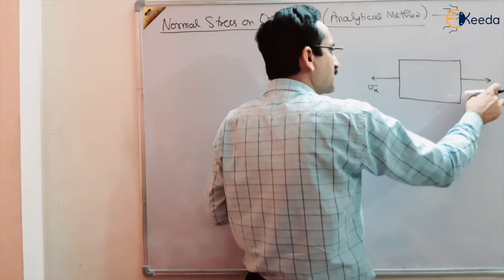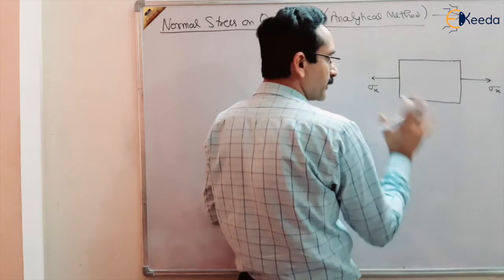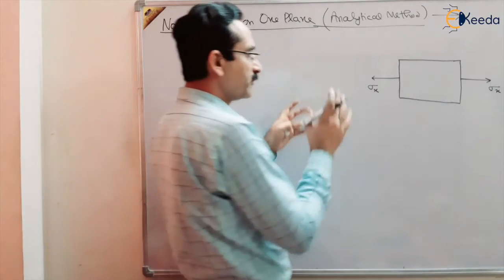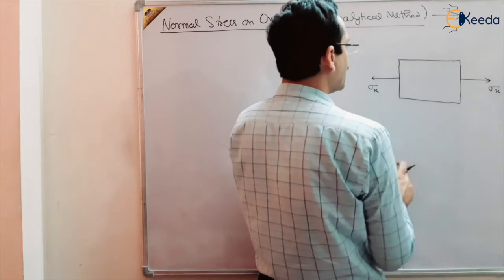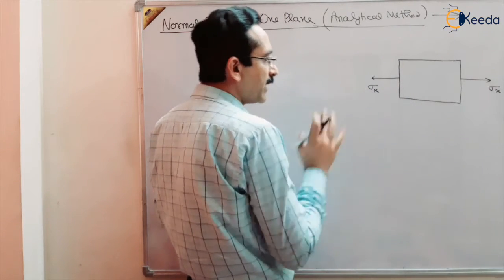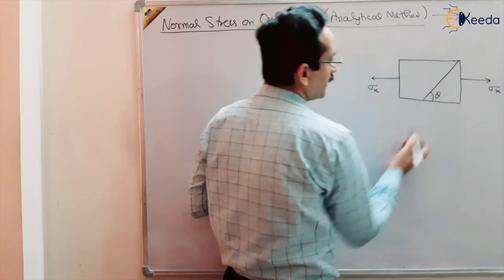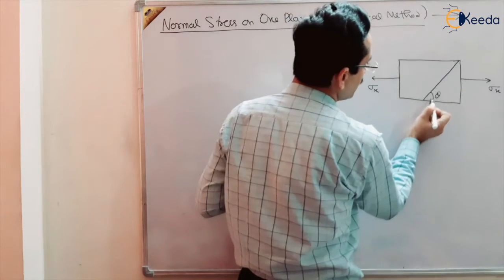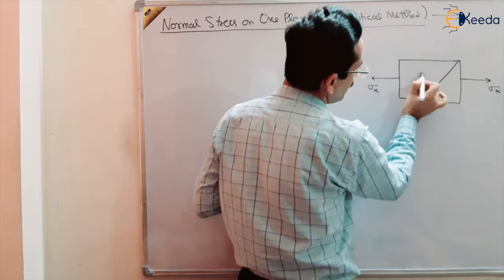When we are applying sigma x in one plane, by default sigma x is also in the opposite plane because the body is in static equilibrium. Otherwise the body will not be in static equilibrium — there will be acceleration. So we are considering static equilibrium in which normal stresses are applied on one plane. This is sigma x, and we want to find out at an angle theta to the horizontal, the stresses on this oblique section.